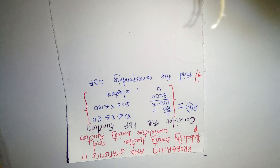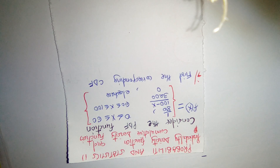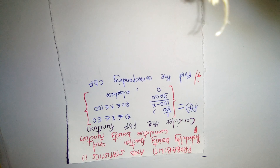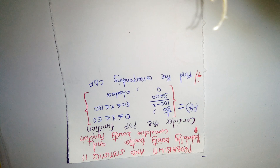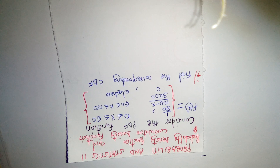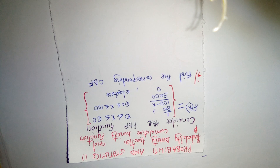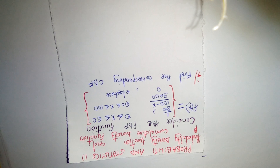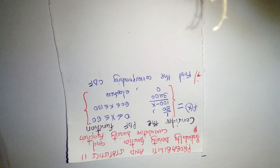Part one requires us to find the corresponding CDF. You've been provided with the PDF and are asked to derive the CDF — the cumulative density function. The key question is: how can you derive a CDF from a PDF? The answer is that you integrate the provided PDF in order to derive the CDF.